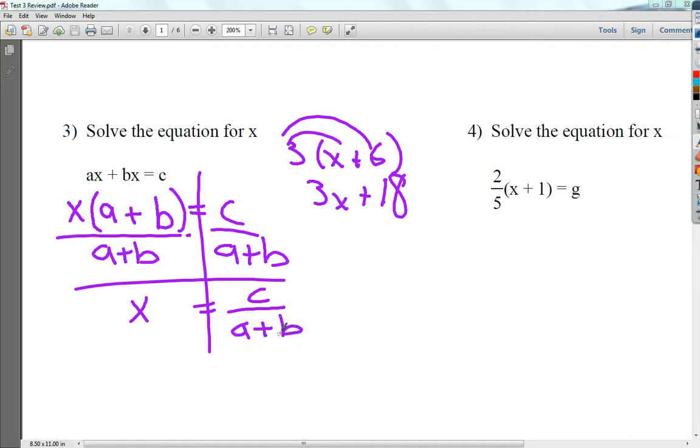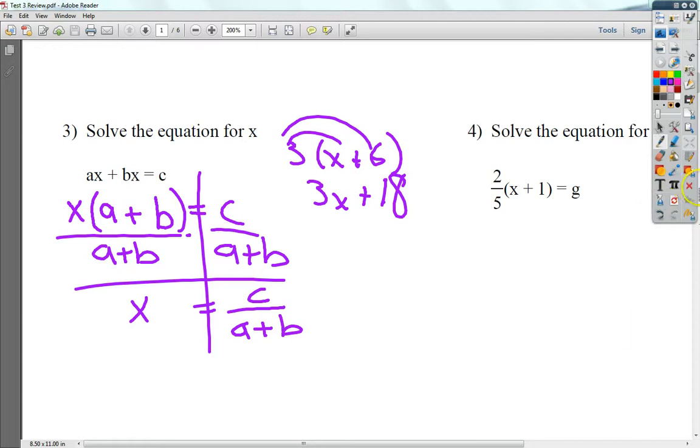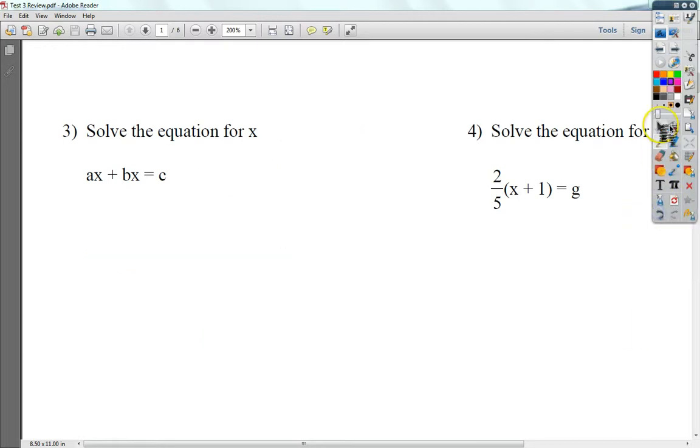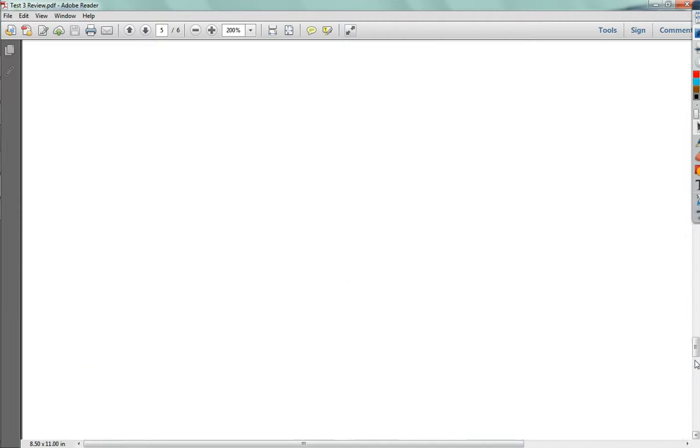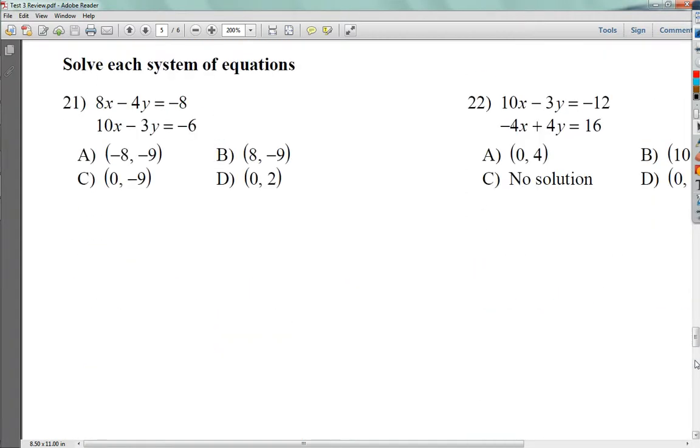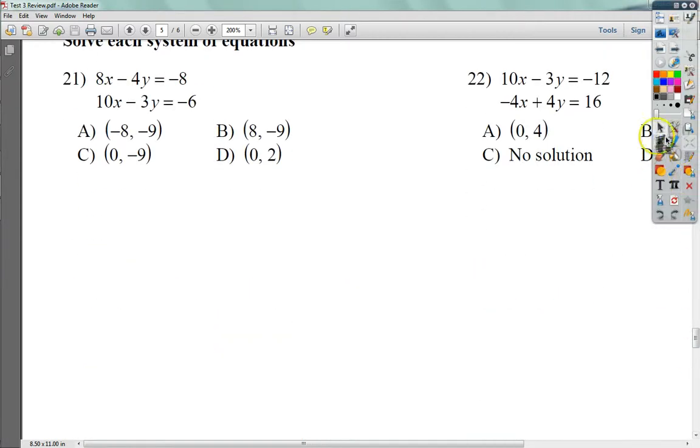You're just doing factoring, which is reverse distributive property. Not a huge deal. Number 21, I'm actually going to show you 21 and leave 22 for you. Not because I am a sadist, but because it's a good idea to do one before you take the test.